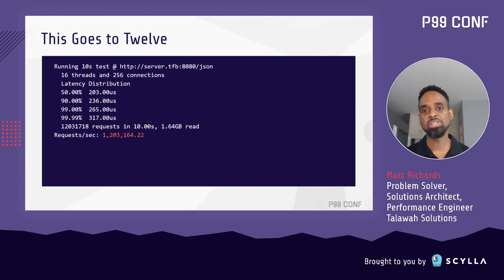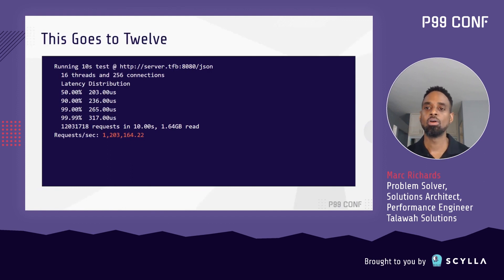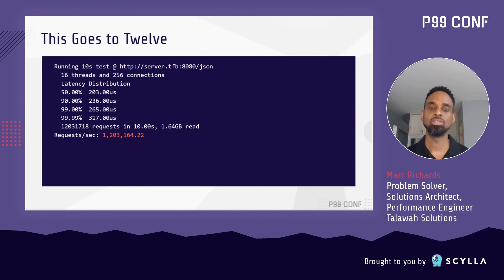These final optimizations combined give us a performance boost of just over 4%. Throughput moves from 1.15 million requests per second to 1.20 million requests per second.